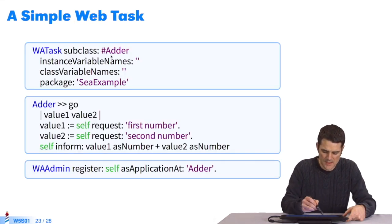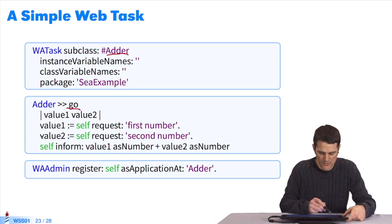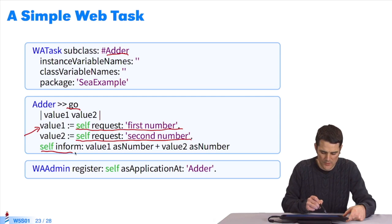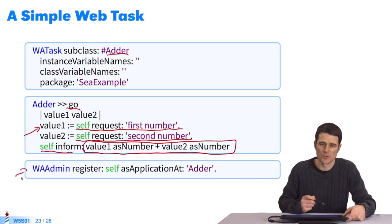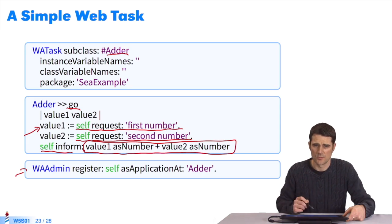So we'll define a task called an adder, and then all the tasks have a method called go. Here, for example, in this task, we'll ask the user to enter a number, so self request, first number. Then, we'll ask him to enter a second number, number two. Then, we'll inform him of a value, which is the sum of these two numbers. On the last line, we'll register this component as an application, a classic web application to access it with a browser.